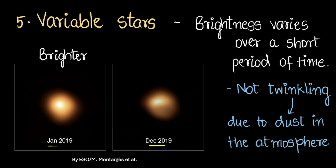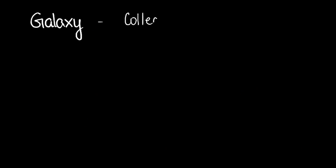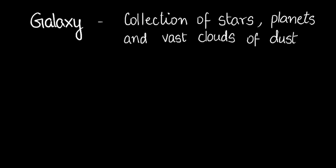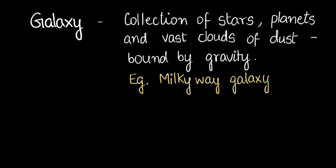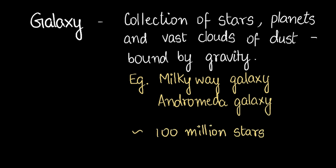So we've discussed a lot about stars. Now let's move to galaxies. A galaxy is a collection of stars, planets, and vast clouds of dust, all bound together by gravity. An example of a galaxy is the Milky Way galaxy or the Andromeda galaxy. On average, galaxies have about a hundred million stars — and it could even be a trillion. It's a huge, huge collection of stars.